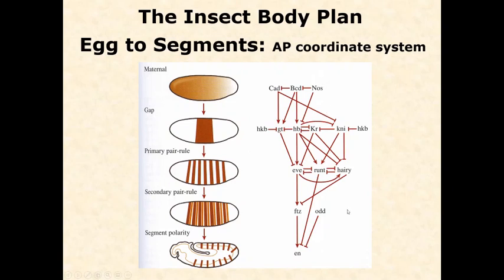Just be aware of that — I don't want you to memorize all the details. But if given a simplified version, you should be able to reason through it. For example: if I increase the expression of Caudal, what happens to Giant? Based on the arrow, Giant expression increases. And if I increase Caudal, what happens to Eve? Caudal goes up → Giant goes up → but because Giant turns off Eve, Eve is going to go down or be completely repressed. So by increasing Caudal in the cells where it's expressed, Eve expression would go down or be completely turned off. It can get complex, and there is very fine control in different areas.